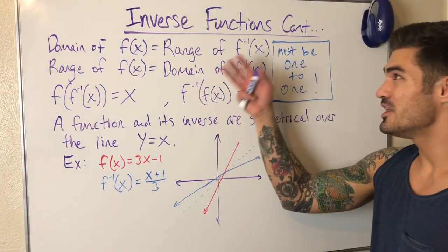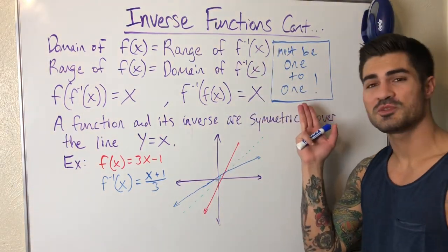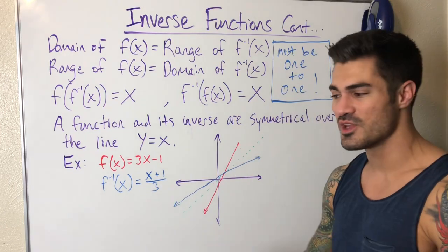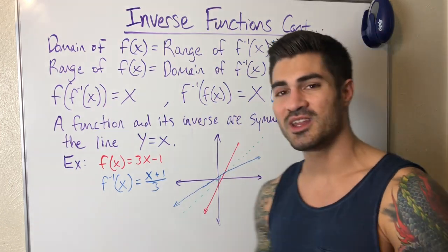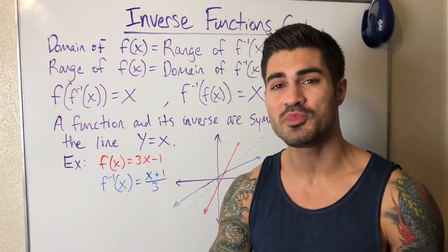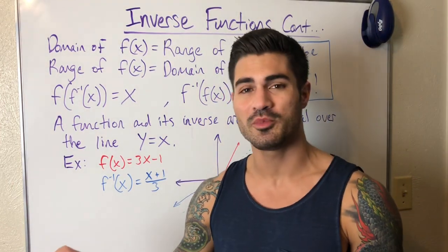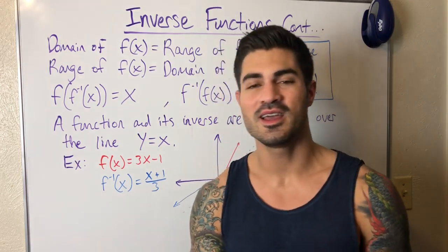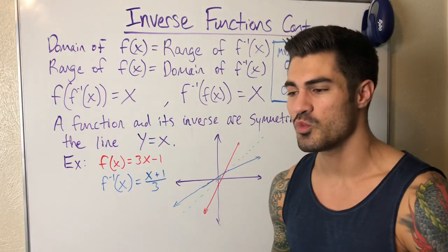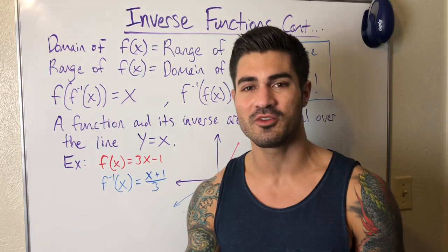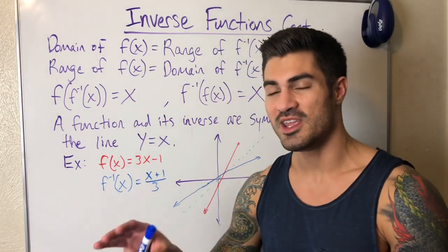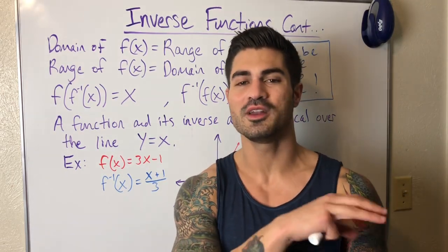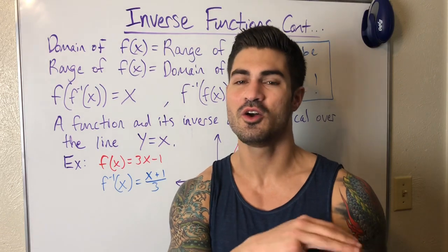Let's review what we learned in the last video. First, a function must be one-to-one for it to have an inverse. One-to-one means it is a function — each input has its own output, it passes the vertical line test, and there's a one-to-one correspondence between domain and range, so each output is the result of exactly one input. It passes the horizontal line test.